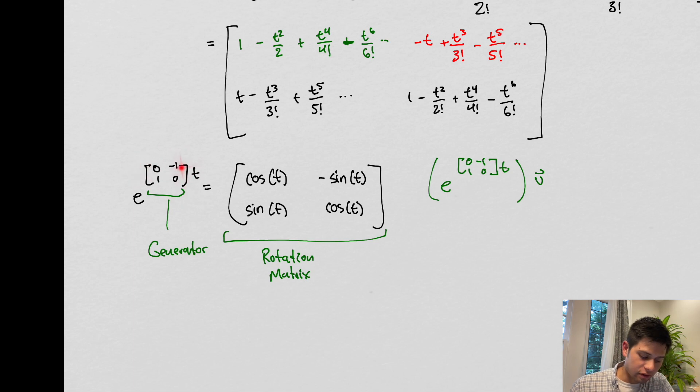The matrix in here plays a key component, it plays a key role in quantum mechanics. We say that this is a generator. This is the generator of rotations of this type of rotation. This is a generator.